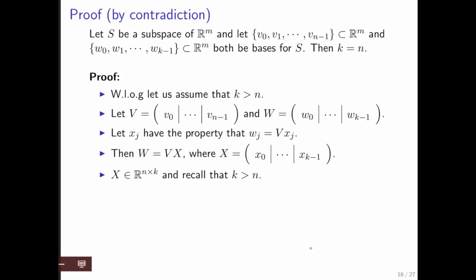We can then take all of those x's and make them into a matrix. Notice that X has to be n by k. Why? The number of columns in V is n, so the size of each vector x is n, and the number of w's was k, so we have k of these vectors x. Therefore X is n by k, and k is greater than n.